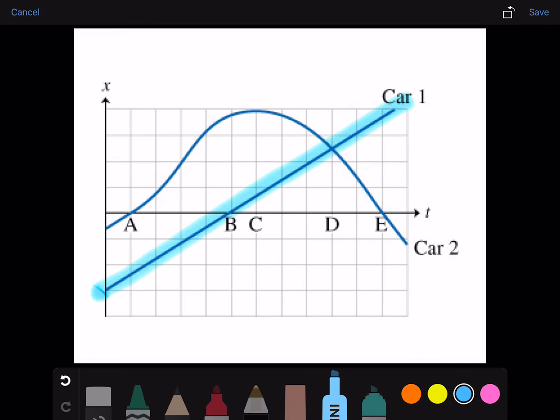At which of the letter times, if any, does car 2 momentarily stop? Car 2 momentarily stops right here at time C because the slope of the tangent line is zero because it's just a straight line.